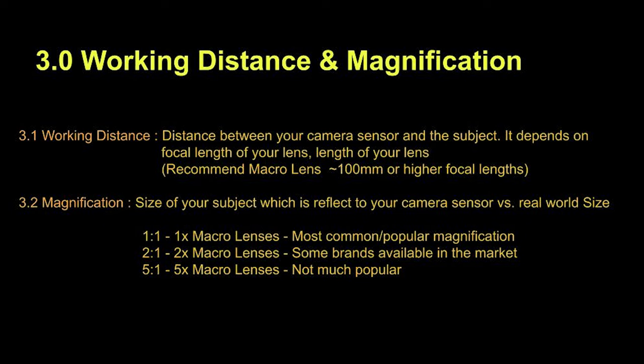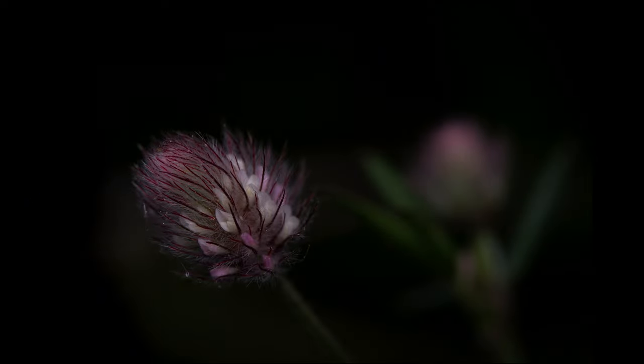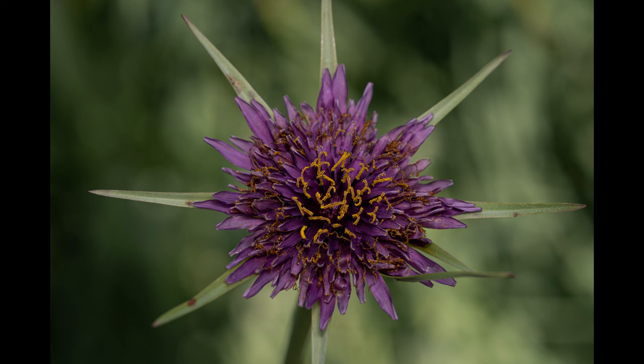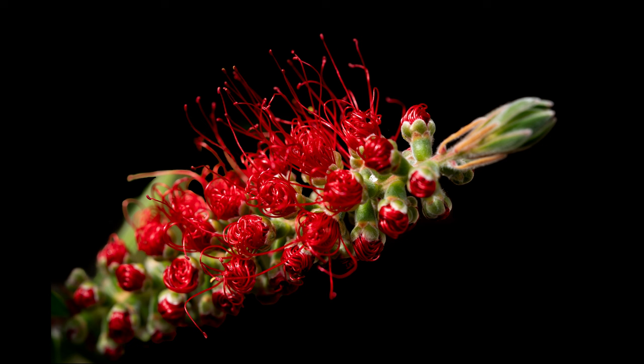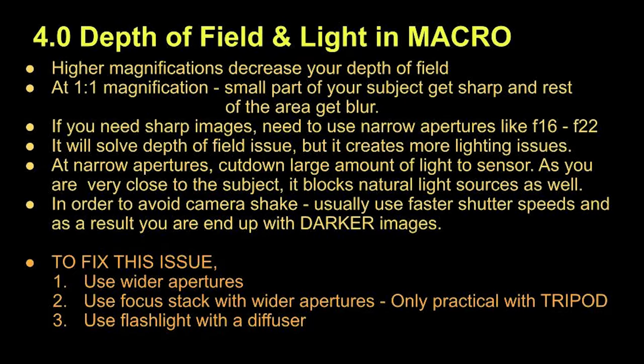2-to-1 or 2x macro lenses — some brands are available in the market. 5-to-1 or 5x macro lenses are not very popular. Let's move to depth of field and lighting in macro photography. Higher magnifications decrease your depth of field. At 1-to-1 magnification, only a small part of your subject gets sharp and the rest of the area gets blurred. If you need sharp images, you need to use narrow apertures like F16 to F22.